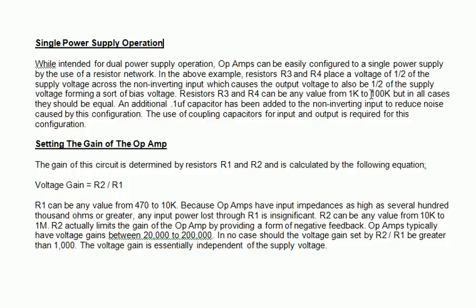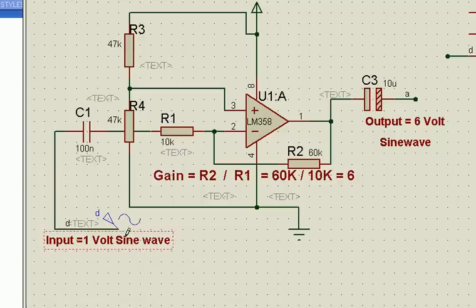R3, R4 can be any value from 1k to 100k, but in all cases they should be equal. An additional 0.1 microfarad has been added here. We have forgotten here.